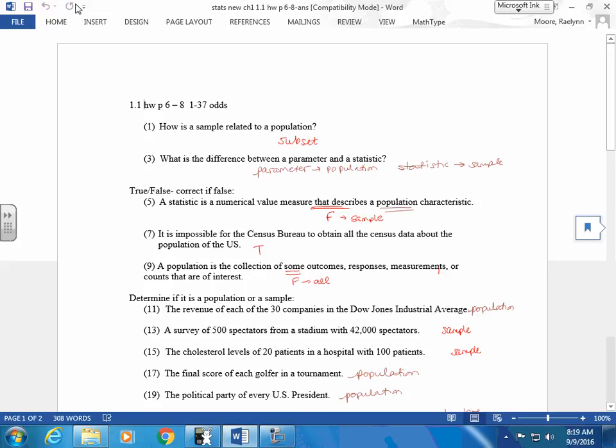The difference between a parameter and a statistic? Parameter is for which group? Population. And statistic is for? Sample. A statistic is a numerical value that describes a population characteristic. False. It describes a sample. Or you could change this one to say a parameter describes the population.